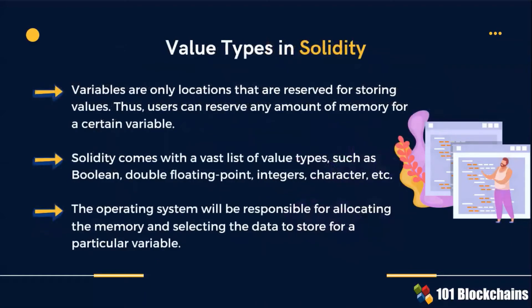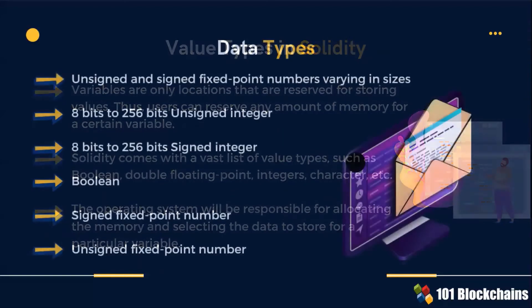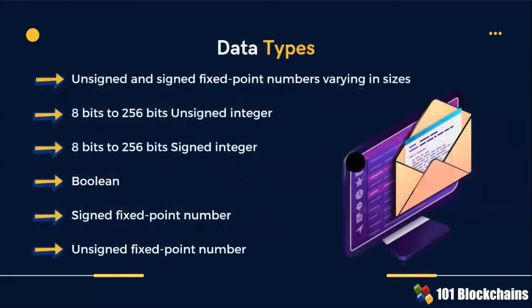Variables are locations that are reserved to store values. Solidity comes with a vast list of value types, such as Boolean, double floating point, integers, and character. There are various data types in Solidity, such as 8-bit or 256-bit unsigned integer, Boolean, and unsigned fixed point number.